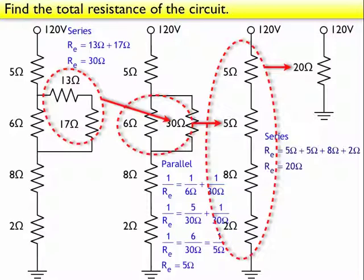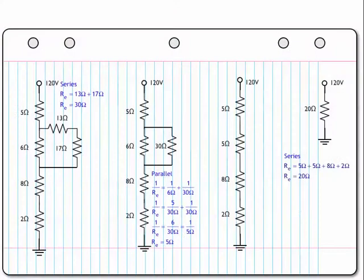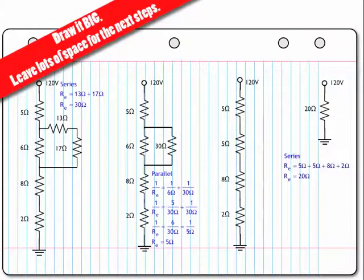So I've done this on the computer screen. The question is what does it look like on your sheet of paper? Well your paper's going to look something like this. Draw it big. Leave lots of steps in between these spaces. Because we're going to work backwards from right to left. We've just worked from left to right. Whittling the circuit down to a single resistor.